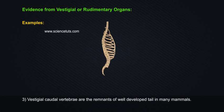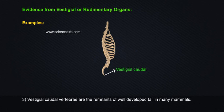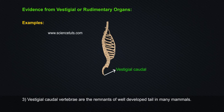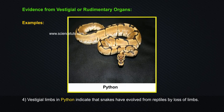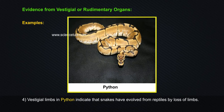Example 3: Vestigial caudal vertebrae are the remnants of well-developed tails in many mammals. Example 4: Vestigial limbs in python indicate that snakes have evolved from reptiles by loss of forelimbs.